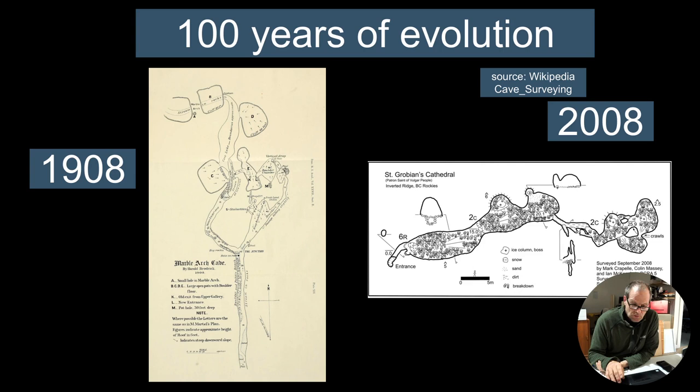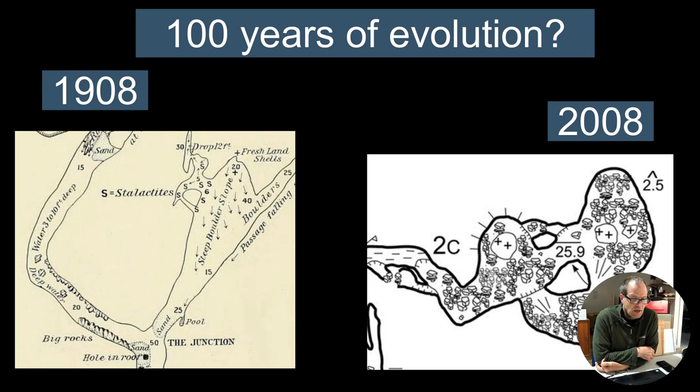Here are two cave surveys off the Wikipedia page for cave surveying, one from 1908 and one from 2008. This is 100 years of evolution, and as you can see, things got a little bit more ugly. We still can't draw the stuff about the caves on the caves. We have to write words like 'crawls' and passages that can't be drawn in the drawing, which shows a shortcoming of the techniques.